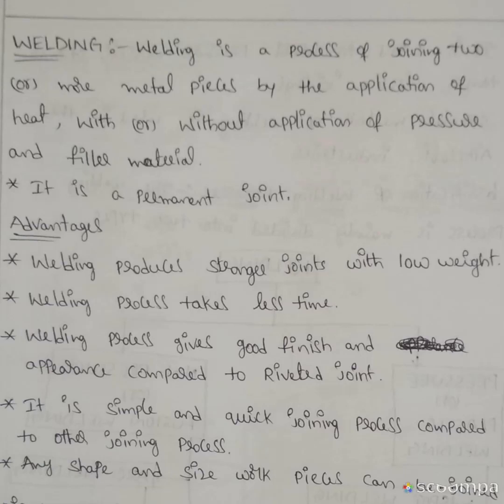Good morning everyone. Today we will discuss about welding. Welding is a process of joining two or more metal pieces by the application of heat, with or without application of pressure and filler material. In the joining process, two or more metal pieces are joined to form a single metal piece. For joining, we apply heat, and sometimes pressure and filler material, and sometimes we are not applying them.